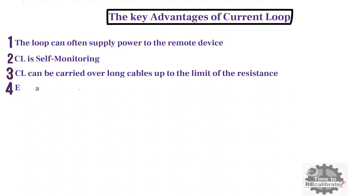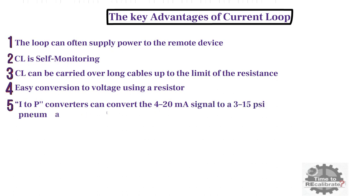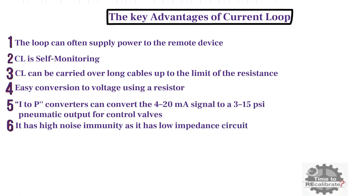The current loop offers easy conversion to voltage using a resistor. Loop-powered current to pressure converters can convert the 4 to 20 mA signal to a 3 to 15 pounds per square inch pneumatic output for control valves, allowing easy integration of 4 to 20 mA signals into existing pneumatic plant. Current loop has high noise immunity because it has low impedance circuit usually through twisted pair conductors.